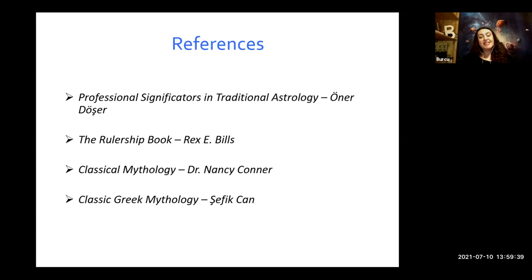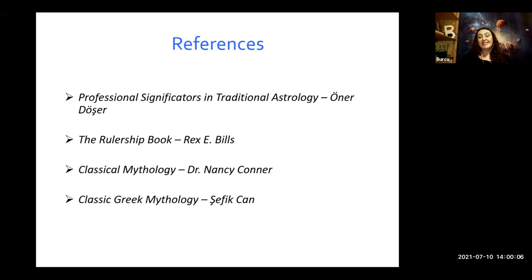These are the books I study most and took notes from. This is 'Professional Significator in Traditional Astrology' by my teacher. This Rex Bills 'Rulership Book' is very useful — I look at it all the time and checked professions from it, so I strongly advise having a look if you are interested. For the mythology part, I checked Classical Mythology with Dr. Nancy Conner and Classic Greek Mythology by Shafik Can, a Turkish mythologist.